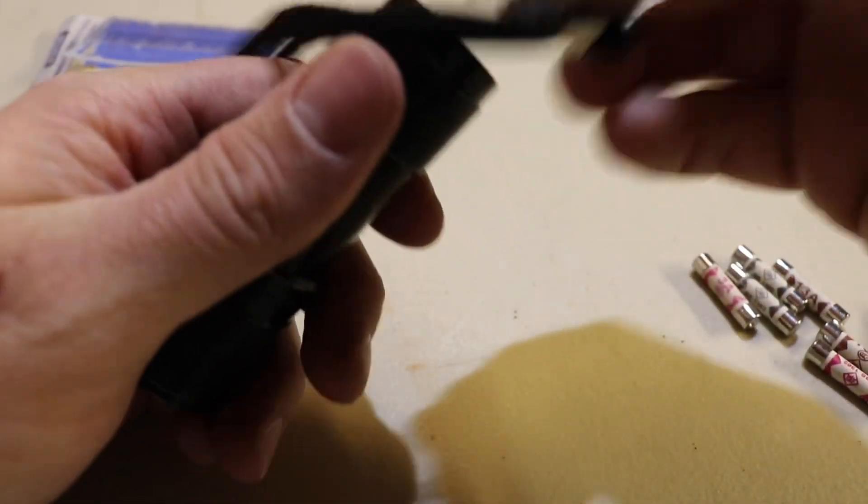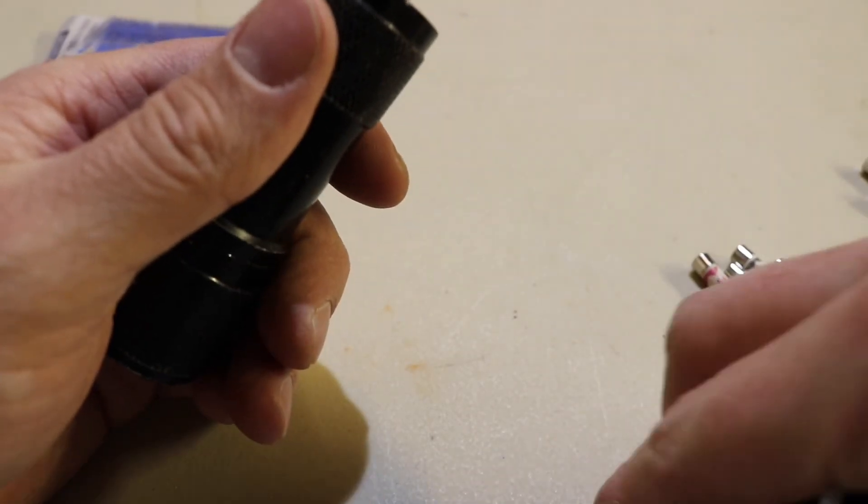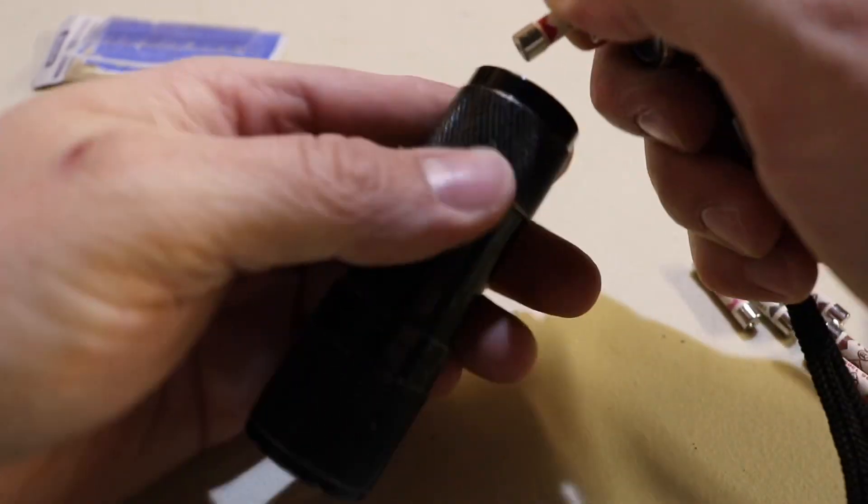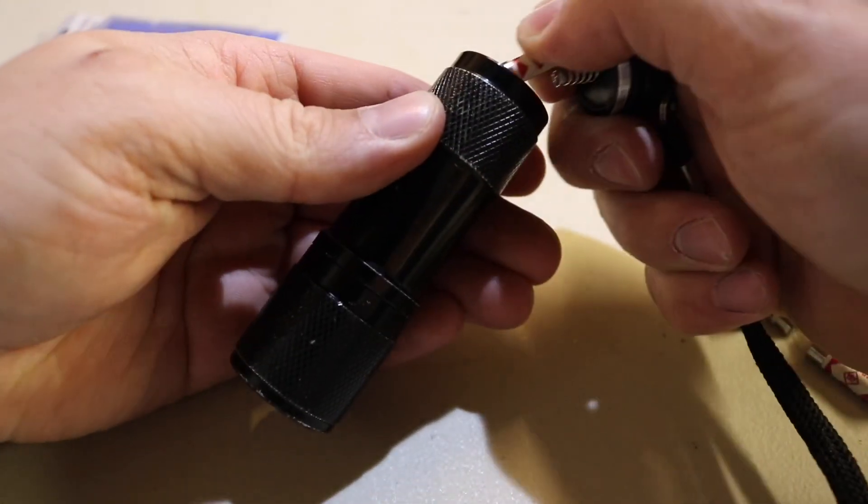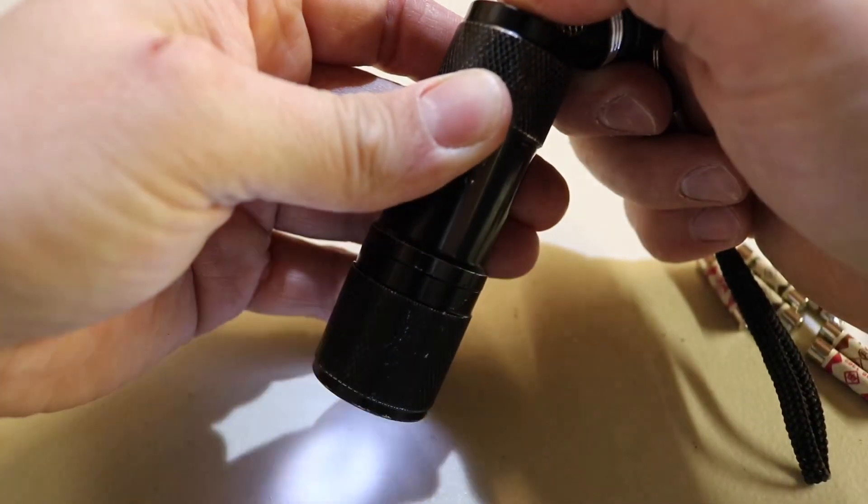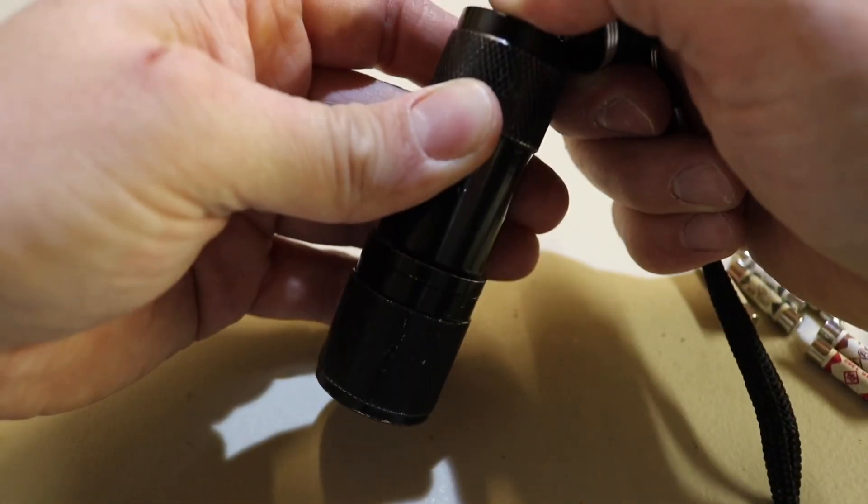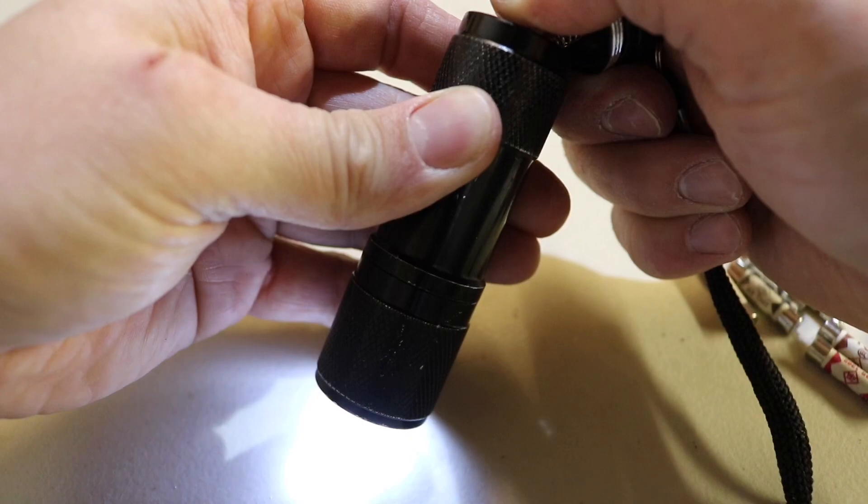I tend to use a pocket torch. You can use a bigger torch, but it's a lot harder because you have to make sure that the bases are touching the batteries. And as you can see from here, there we go - on, off, on, off.